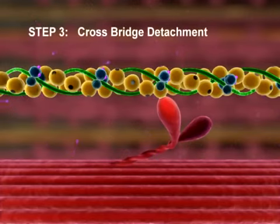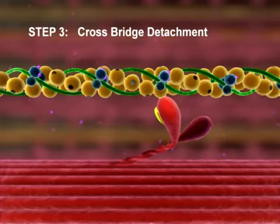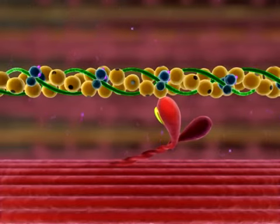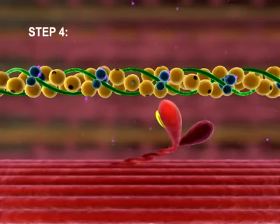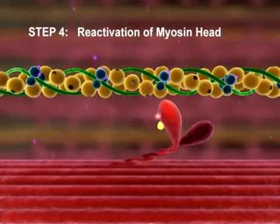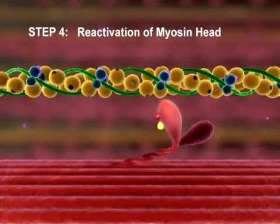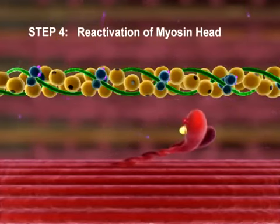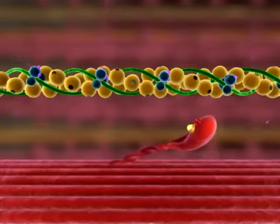Step 3: Crossbridge Detachment. When another ATP binds to the myosin head, the link between the myosin head and actin weakens, and the myosin head detaches. Step 4: Reactivation of the myosin head. ATP is hydrolyzed to ADP and inorganic phosphate. The energy released during hydrolysis reactivates the myosin head, returning it to the cocked position.